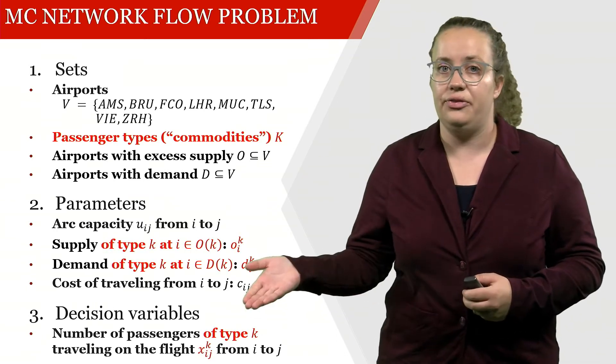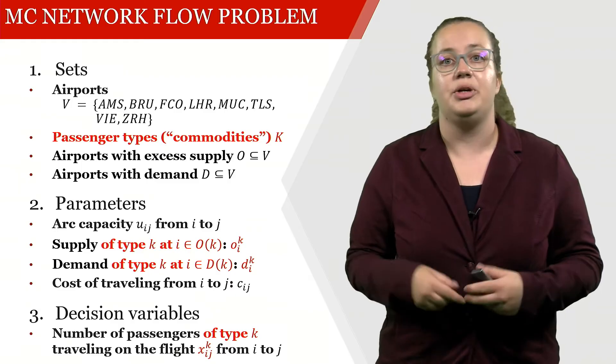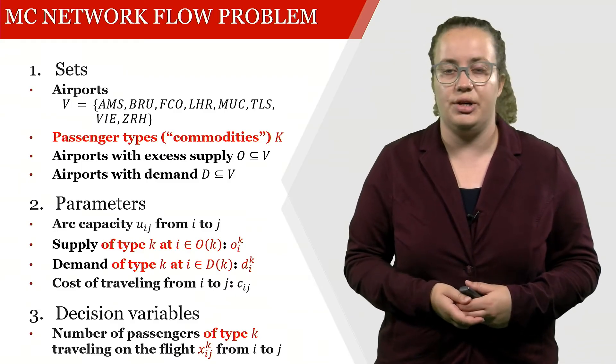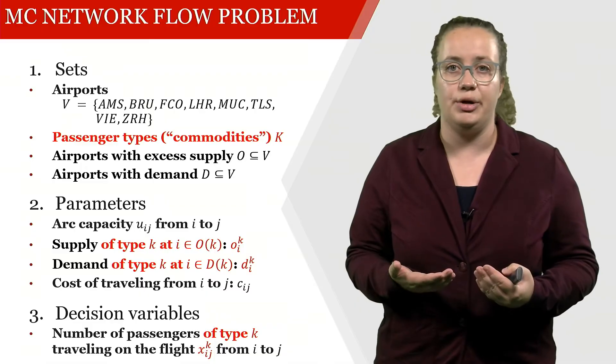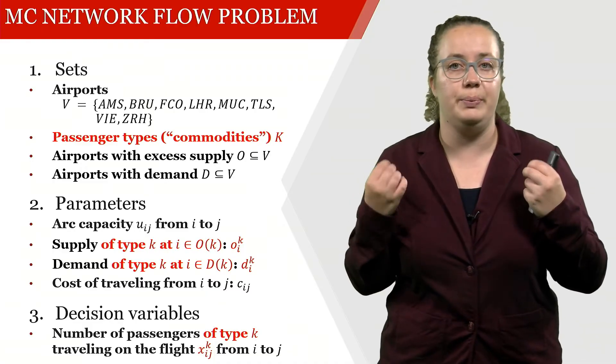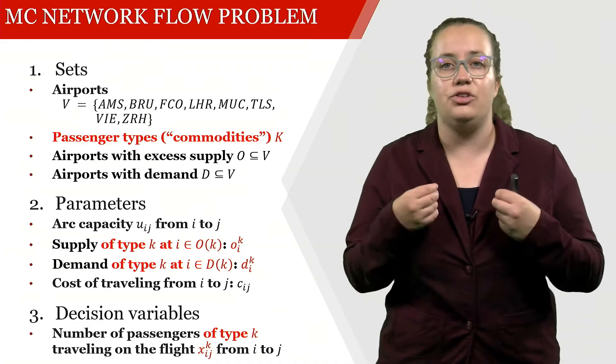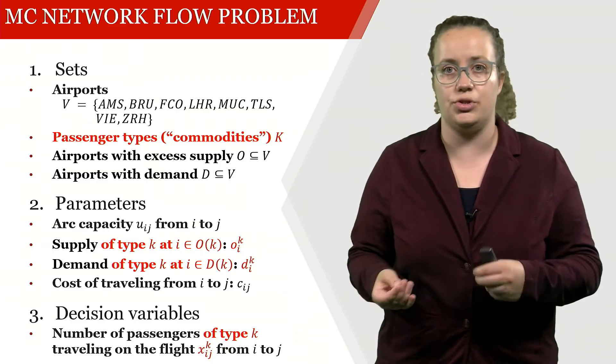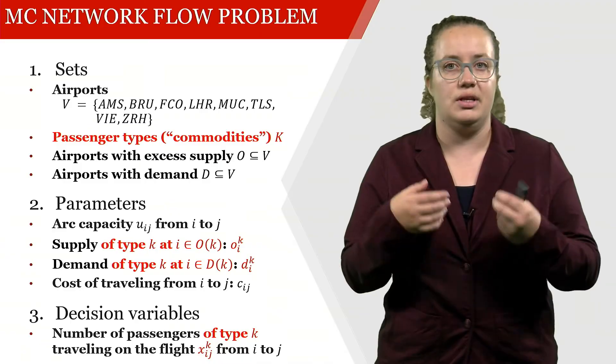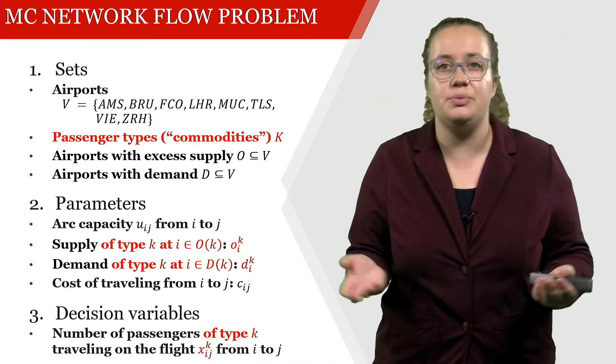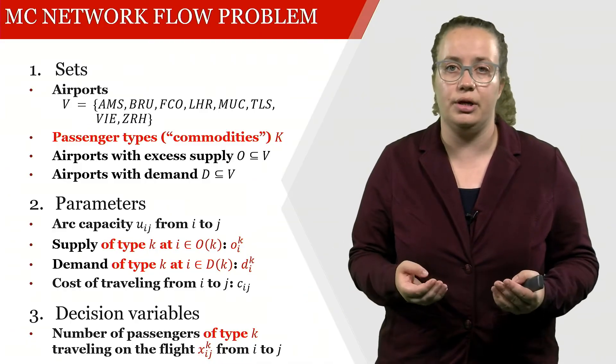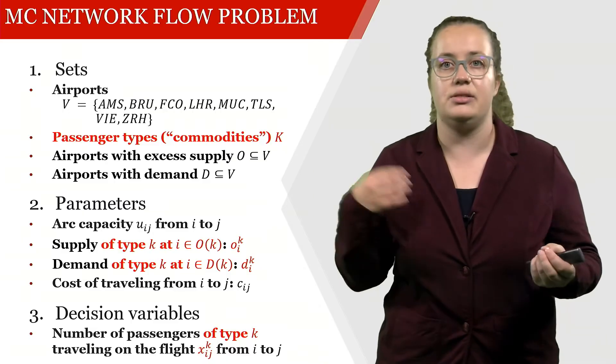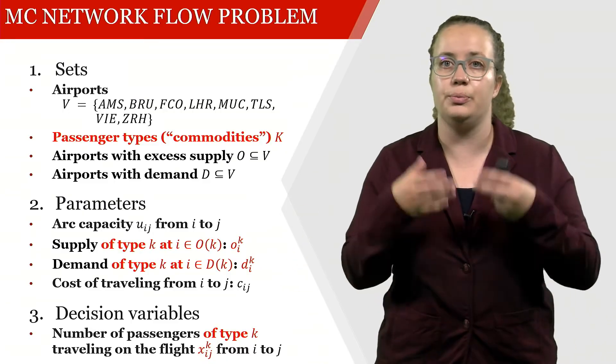The costs don't actually differ, but what is going to differ is the decision variable. So our decision variable now, of course, has to be the number of people that travel on a given flight - so for example from Toulouse to Zurich - of a certain passenger type, because we obviously want to know if these people are currently traveling from Brussels to Vienna or from Rome to Amsterdam.